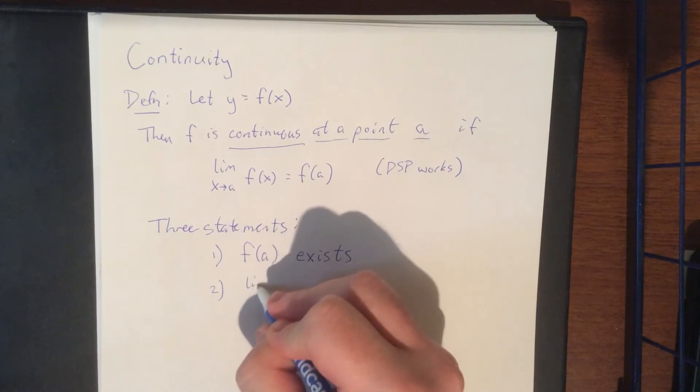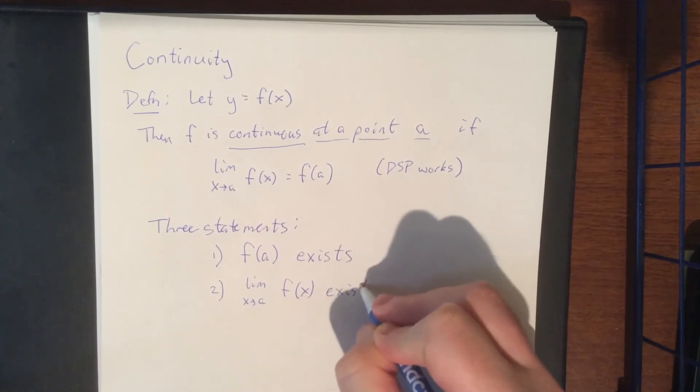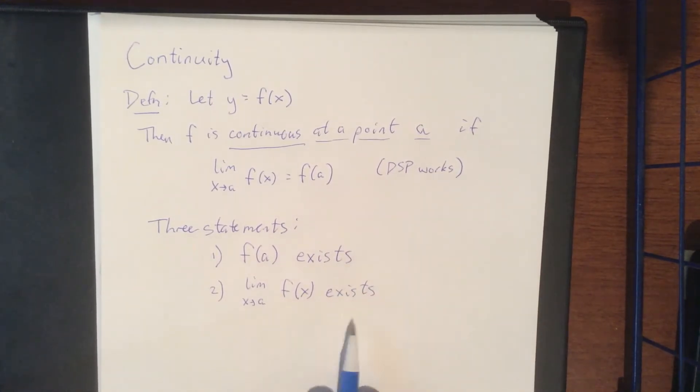The second thing that we're saying here is that the limit as x approaches a of f of x also exists. Now even that statement can be broken down further by saying that means that the left-hand limit exists, the right-hand limit exists, and those two limits are equal to each other.